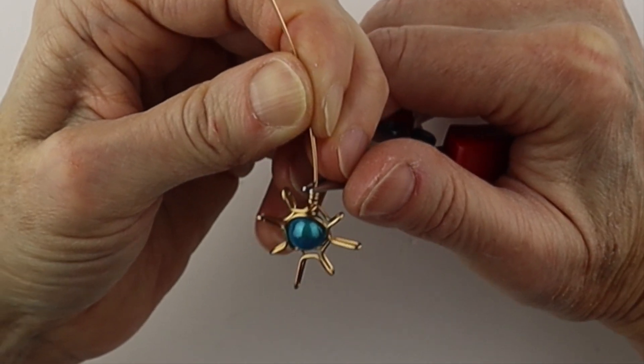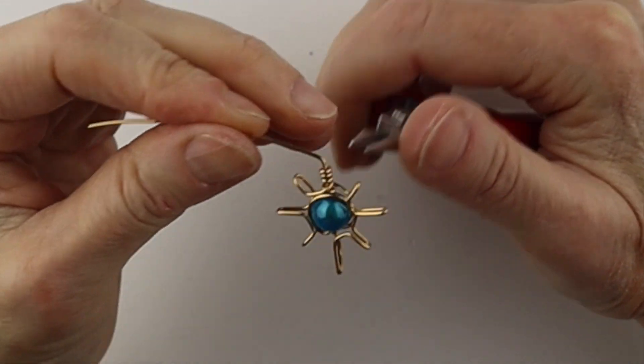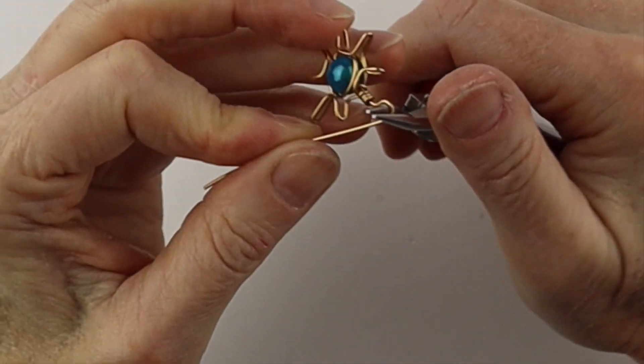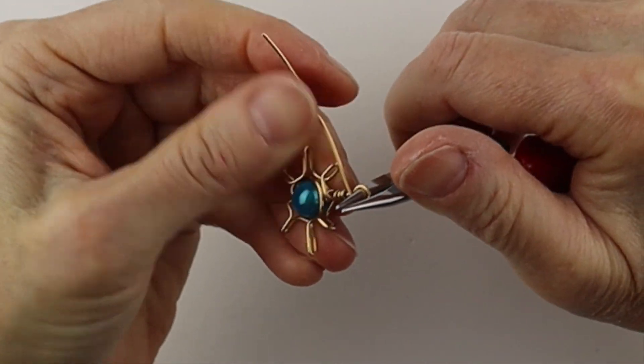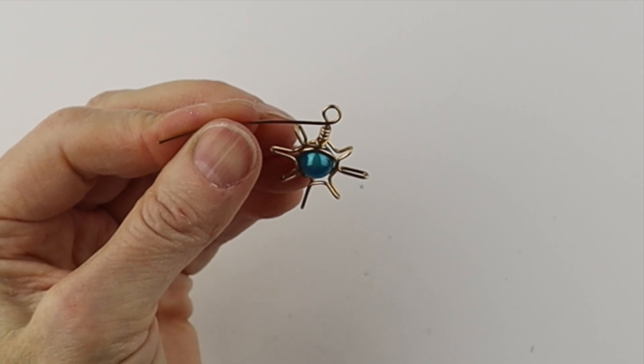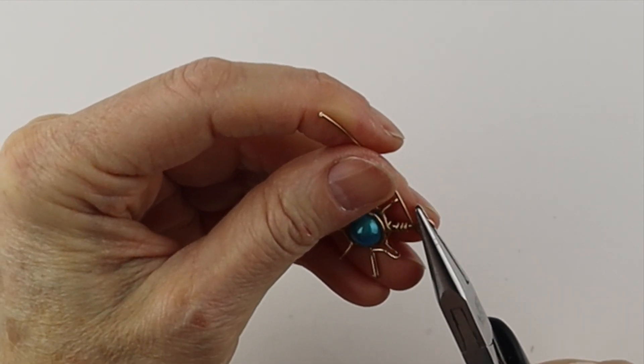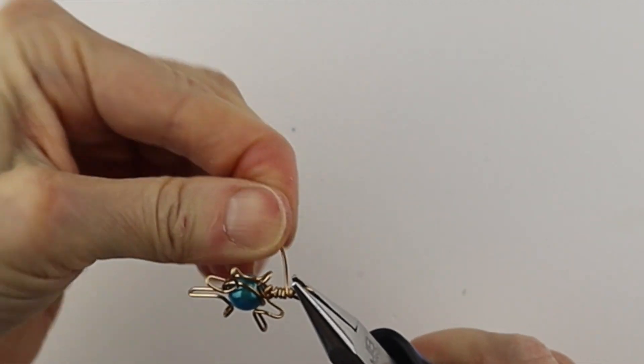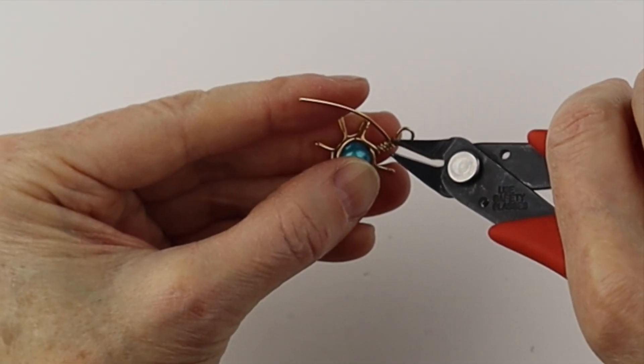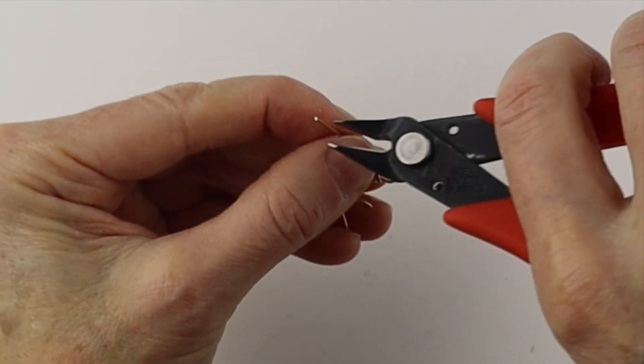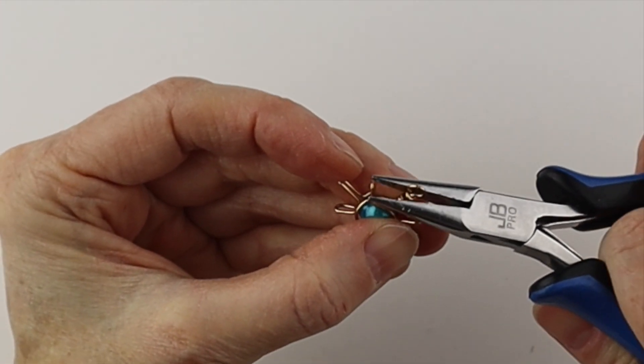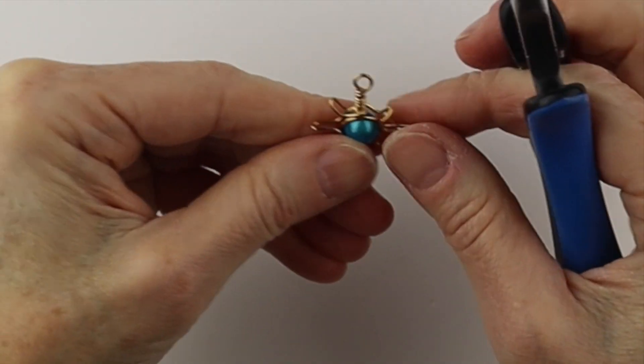Hold this with your round pliers, bend it to the left and then hold this on the larger part of your round pliers. Bring it around to make your loop. Hold this with your flat pliers and bring it around a couple of times. When you clip it at the back, these two ends are going to meet flush and then you can just pinch them down a bit.